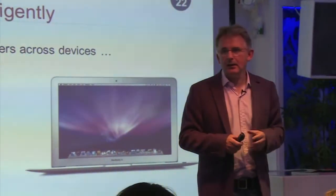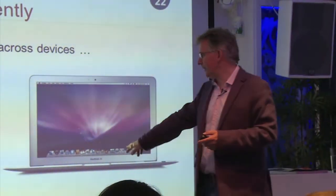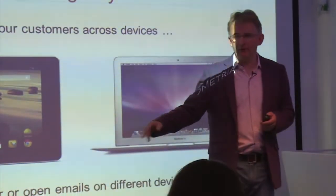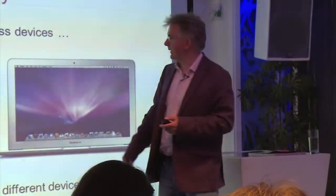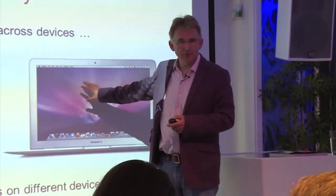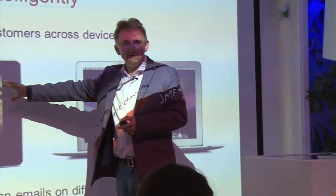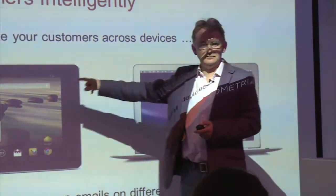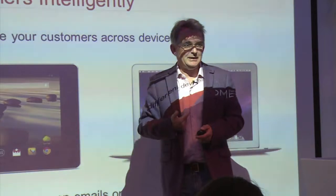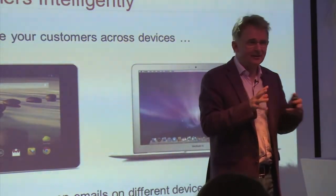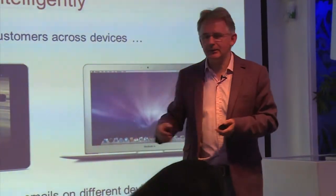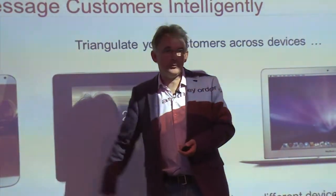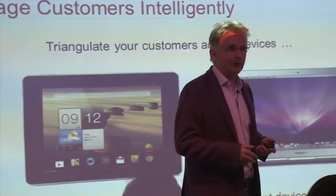I know it's easier said than done, but one thing I still find some people are not doing is tagging their emails with an individual identifier. So if I bought on my laptop and I've just opened your email on my iPad, you can now connect me. You've now got two cookies pointing to me, so you've triangulated me across two devices. I don't need to purchase on each device separately before you know who I am — I just need to open your email and you've got me across all three.